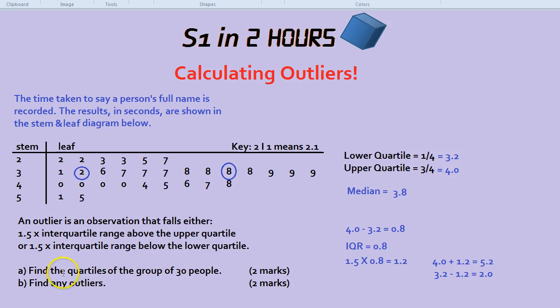Well as the word quartile suggests it comes from the word quarter. So the lower quartile is one quarter the way through the group. The upper quartile is three quarters the way through the group. So let's find that. It's 30 people and one quarter of 30 or 30 divided by 4 is 7.5.